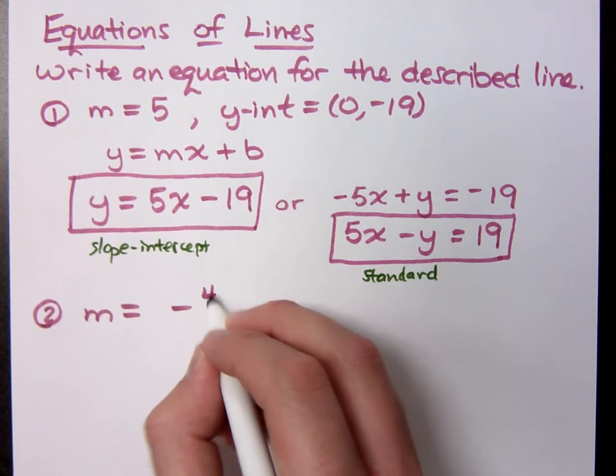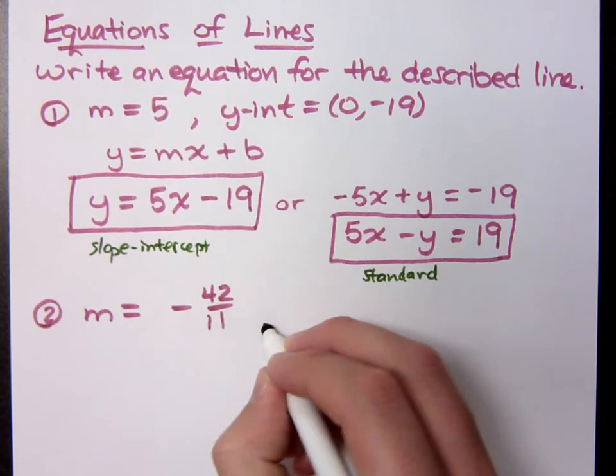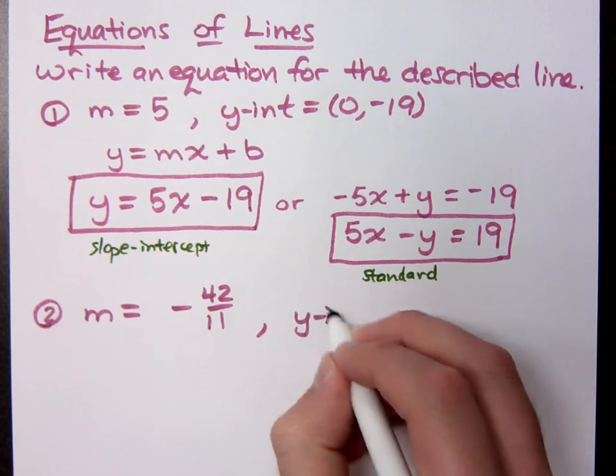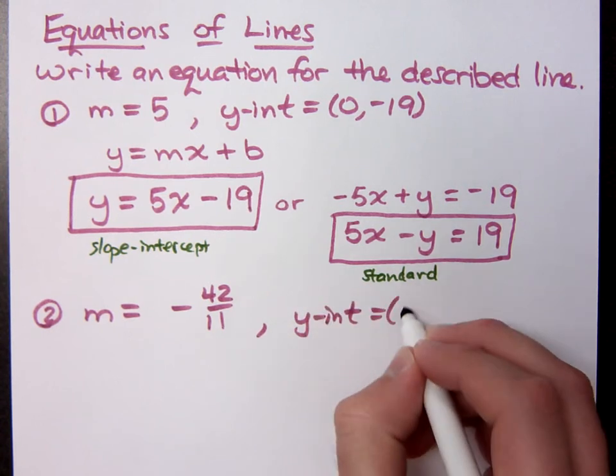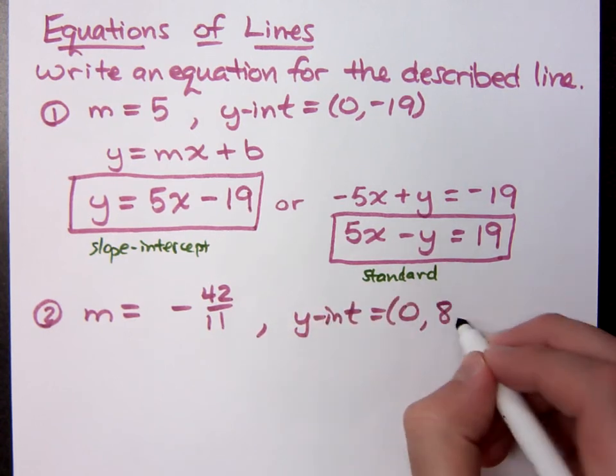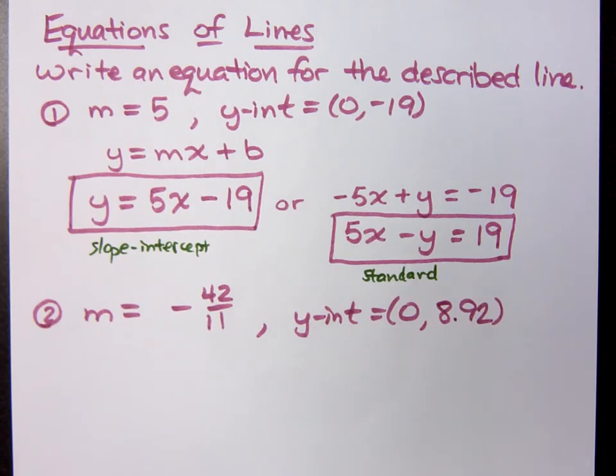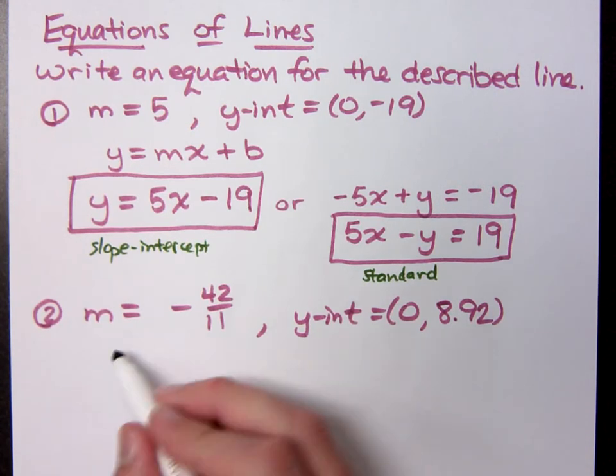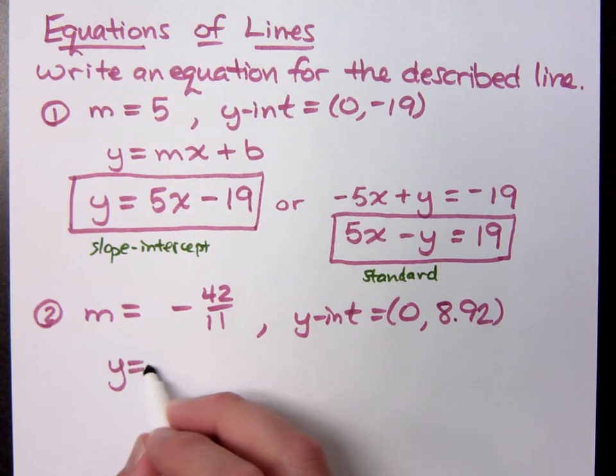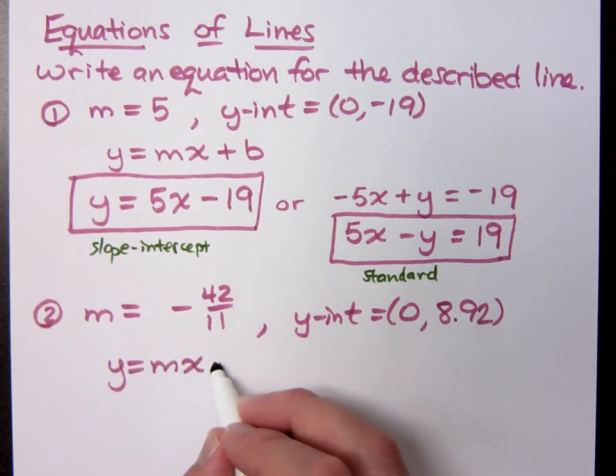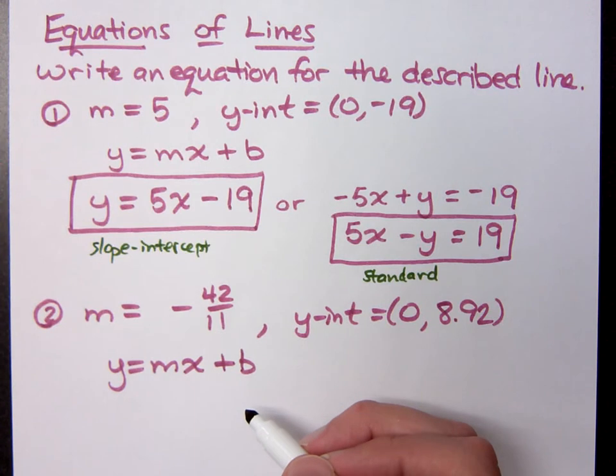If I see your slope is negative 42 over 11, and your y-intercept is 0, 8.92. Now, remember, you already know your slope-intercept form, y equals mx plus b. So, use that guy, and you should be able to come up with your solution very quickly. What is it?